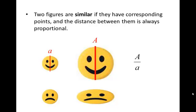They also both have smiles, so we could, for example, take the distance from their smiles and call them big B and little b, and look at the ratio of big B to little b.